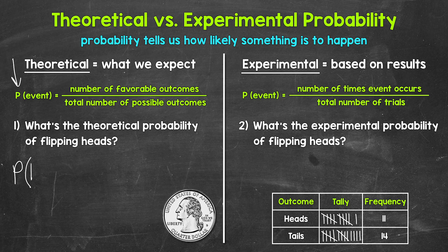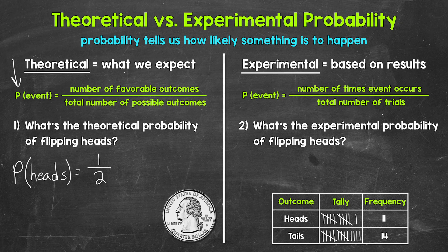So here we have the probability of flipping heads. We need the number of favorable outcomes — how many ways can flipping heads happen? One. One side of the coin has heads. So we have one over the total number of possible outcomes, which is two — heads or tails. There are two sides of the coin and we have an equal chance of flipping either. That's our theoretical probability of flipping heads: one half — a one out of two chance.